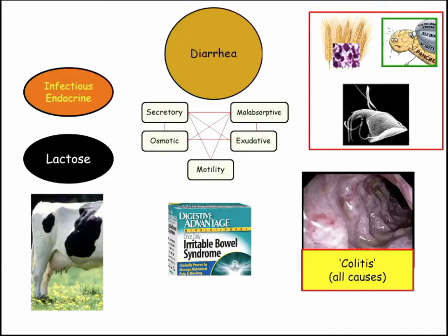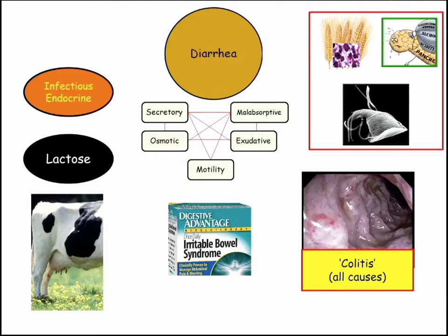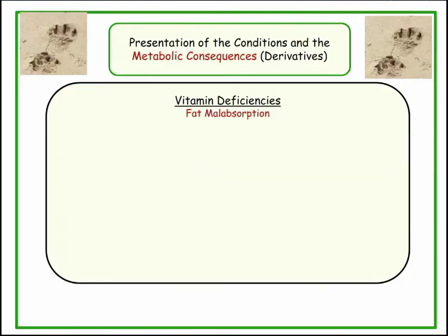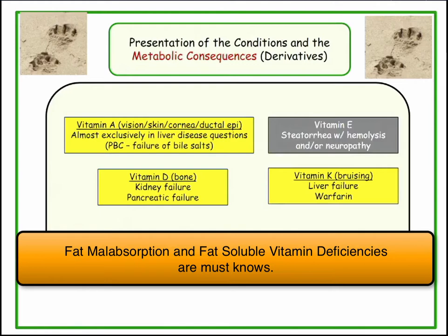Here are the malabsorptive players we're going to cover. The boards love to use diarrheal syndromes to test you on metabolic consequences. Those metabolic consequences are the footprint that lead to the diagnosis — vitamin deficiencies, especially fat-soluble vitamins. They love fat malabsorption: vitamin A, vitamin D, vitamin K causing bleeding. Vitamin E is a rare one — steatorrhea, hemolysis, and neuropathy.